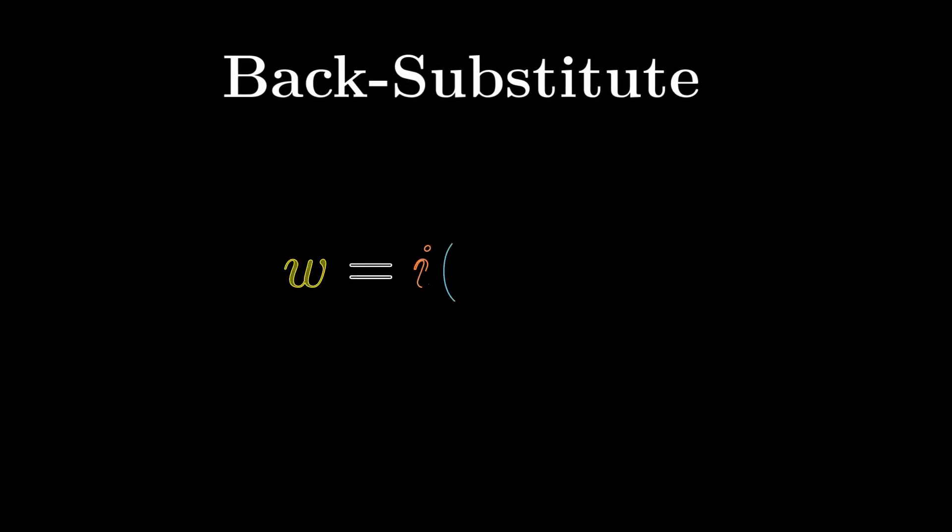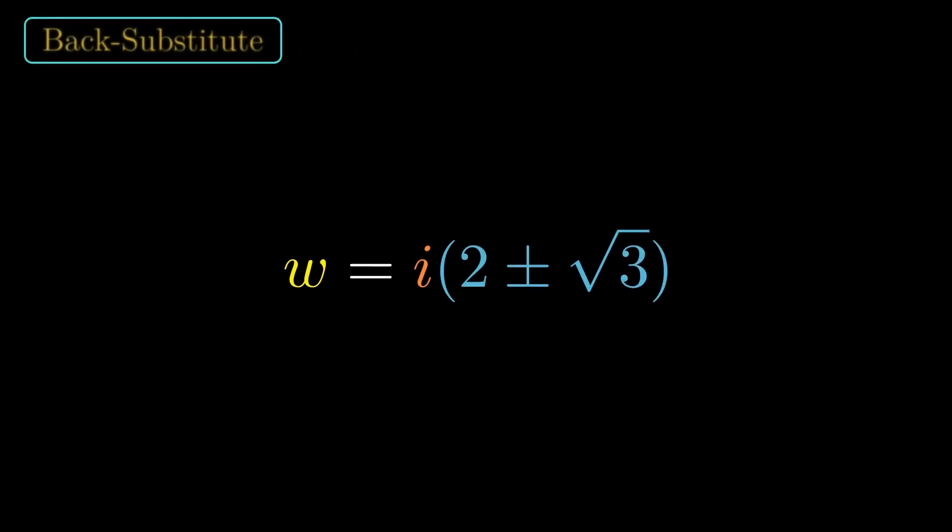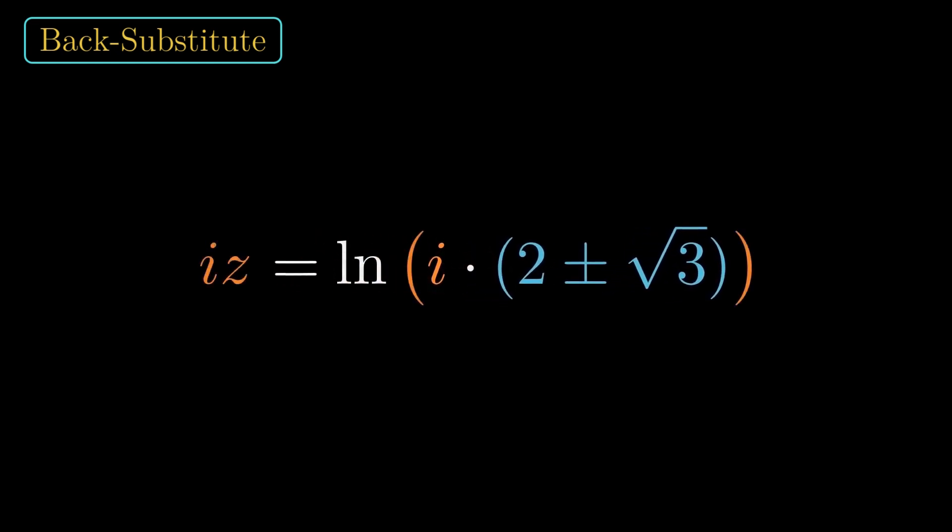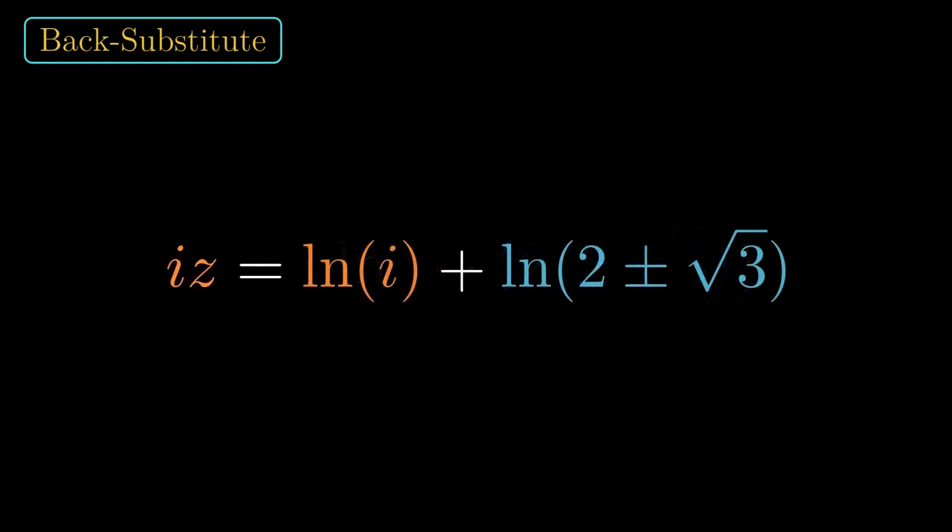We already solved the intermediate variable, w equals i times 2 plus or minus root 3. Now remember what w was, w equals e to the iz. So we can write, e to the iz equals i times 2 plus or minus root 3. Next, take the natural log of both sides, iz equals ln of i times 2 plus or minus root 3. Now split the log using the product rule, iz equals ln i plus ln 2 plus or minus root 3.